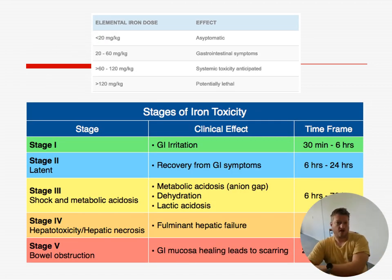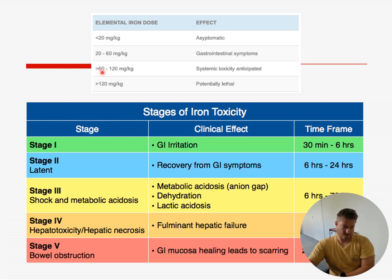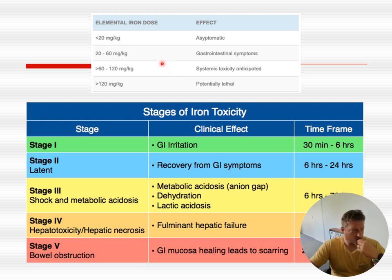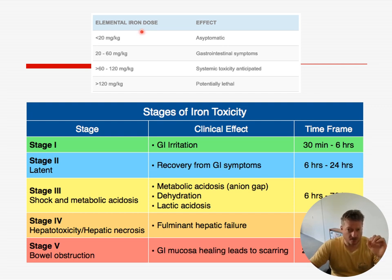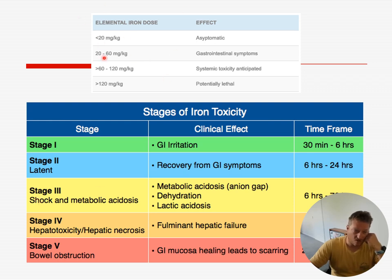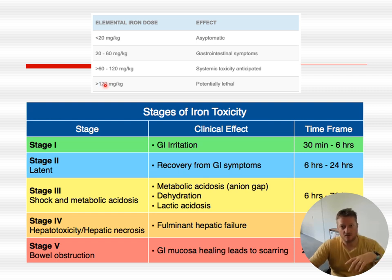Iron becomes toxic at around 60–120 mg/kg of elemental iron. All iron preparations contain different amounts of elemental iron — toxicology services will tell you exactly how much is in each tablet. This patient was already showing signs of toxicity and was in stage three — so you start treatment and work out the exact dose later.